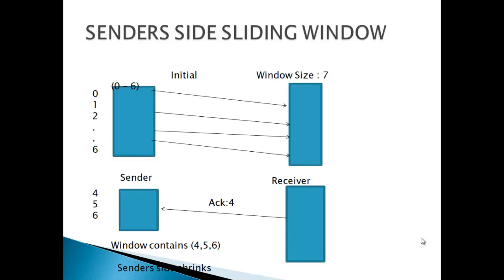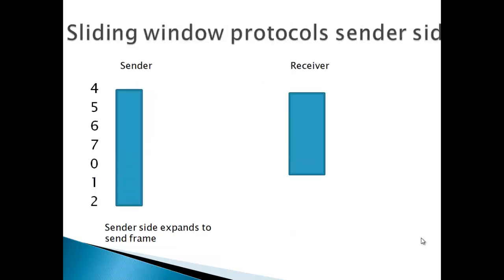After it receives an acknowledgement 4, it means 4 frames have been sent undamaged. Now the window size is increased and it holds frames 4, 5, 6, 7, 0, 1, and 2 as the remaining frames.